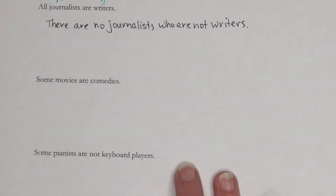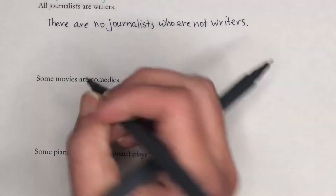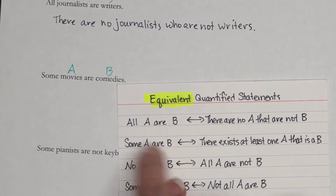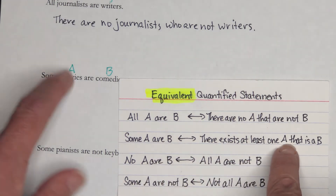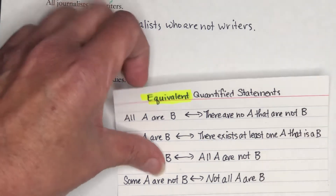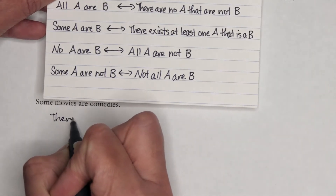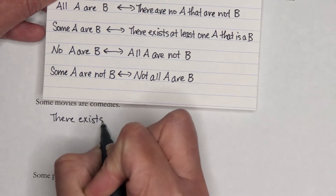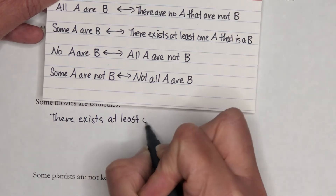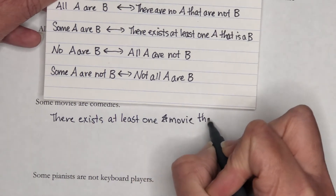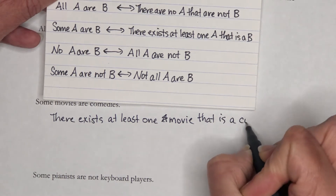The next one: Some movies are comedies. The pattern is: Some A are B. Its equivalent statement would be: there exists at least one A — so at least one movie — that is a comedy. So: there exists at least one movie that is a comedy.